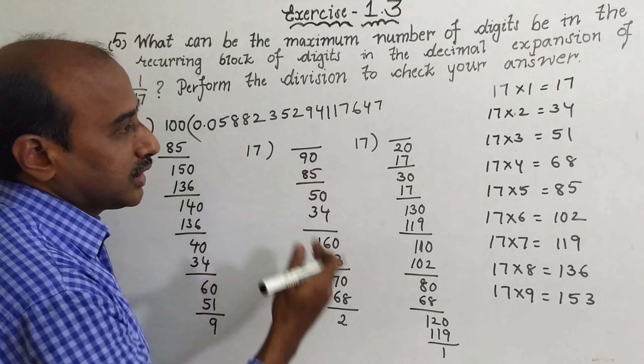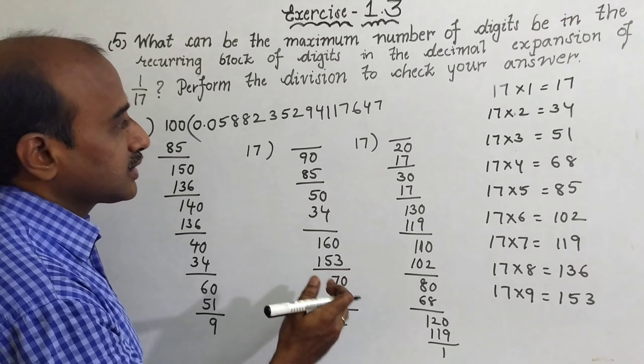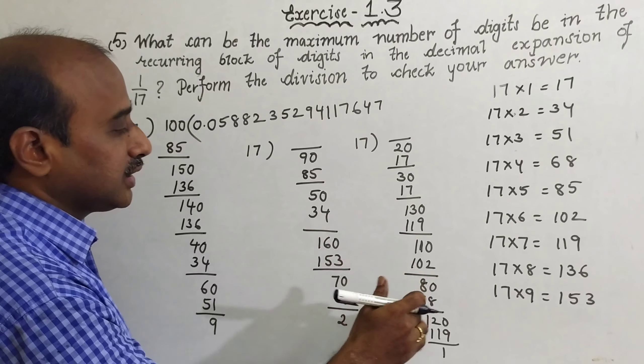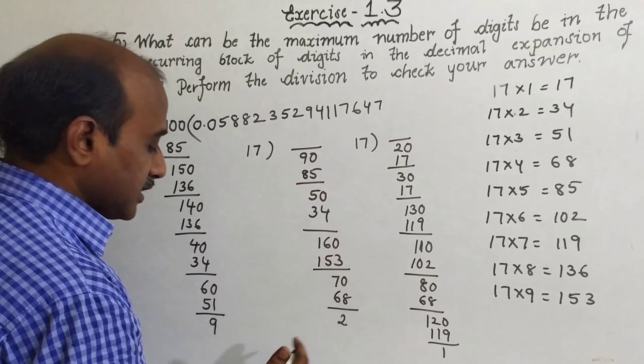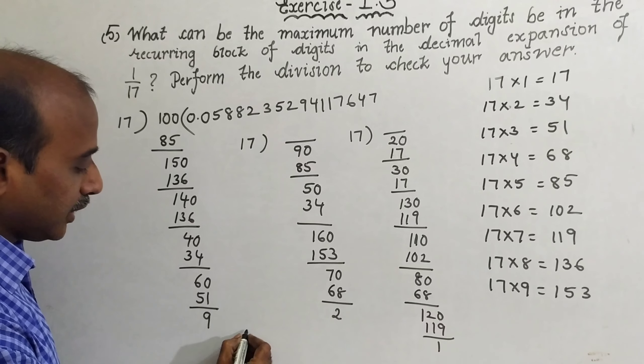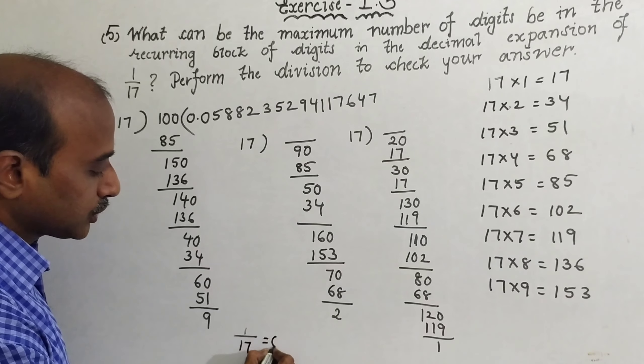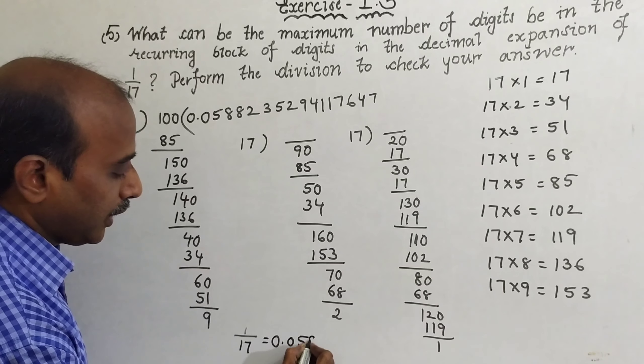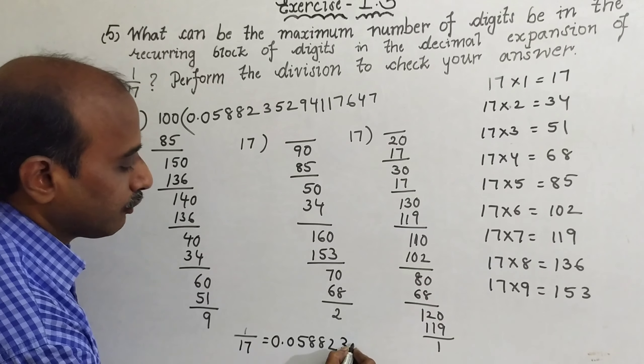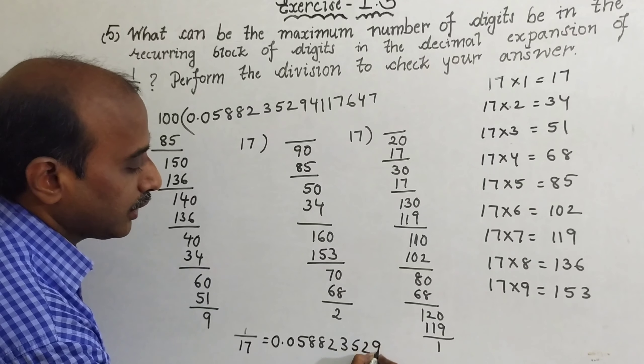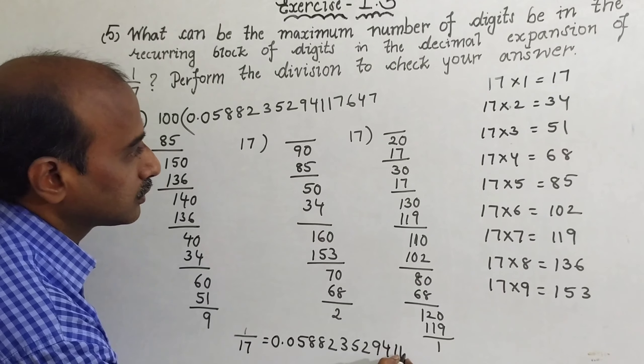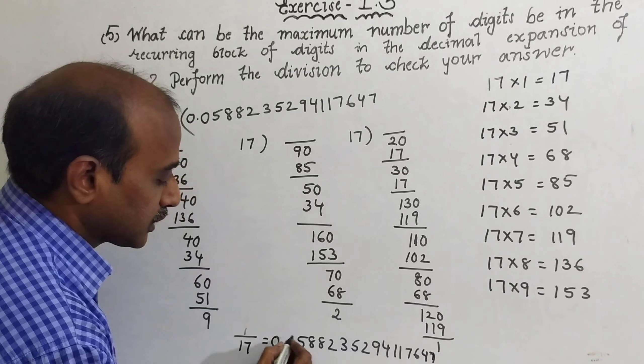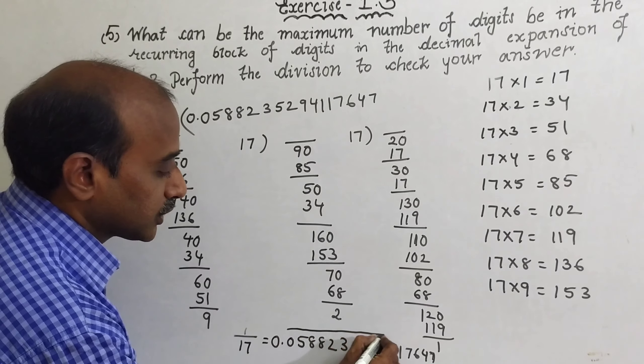So this is a very lengthy calculation. So what they have said, perform that division to check your answer. So what is, again it is repeating, so our answer is, I am writing here: 1 by 17 is equal to 0.0588235294117647 with a bar. This is repeated.